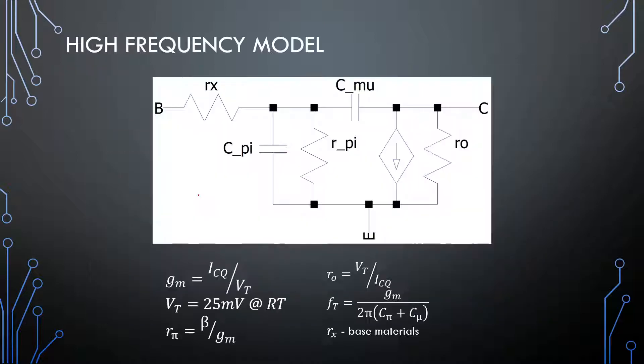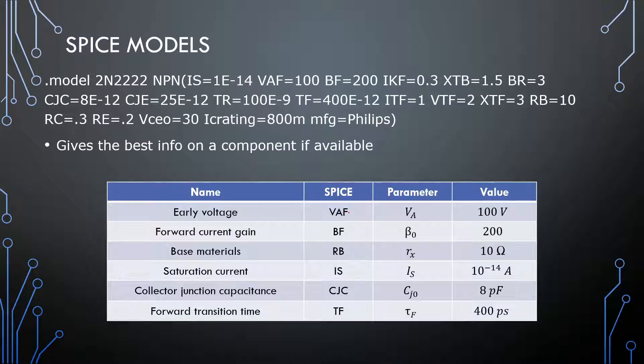Things that we need to calculate our parameters: VT, we know, is at room temperature, about 25 millivolts. Beta, we know, but this is a range on a data sheet. But, that should be VA. Sorry. VA is early voltage. And then, FD and RX.